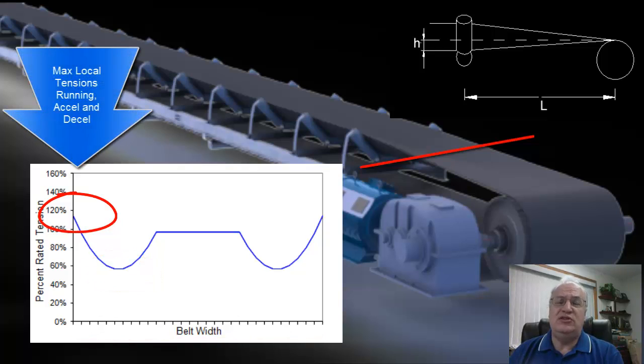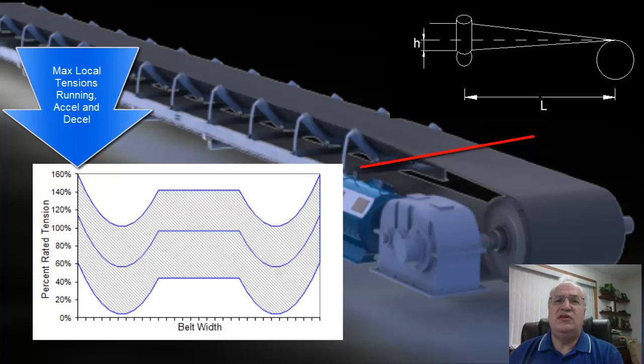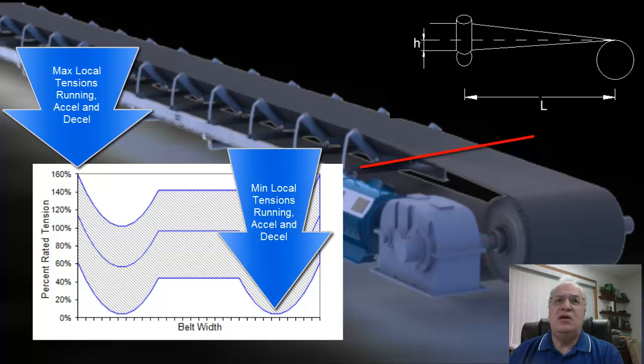And other places along the belt edge, we have low tensions or lowest tensions. So it's those high maximum local tensions and those minimum local tensions during running, starting, and stopping that we're interested in. And we're interested in them through the full range of belt operation.